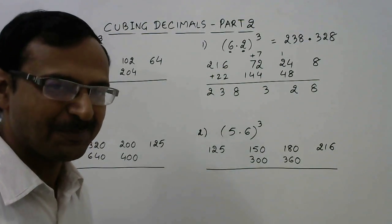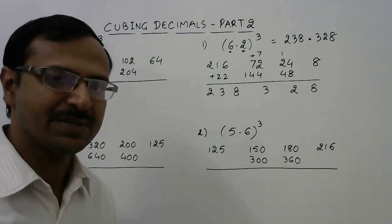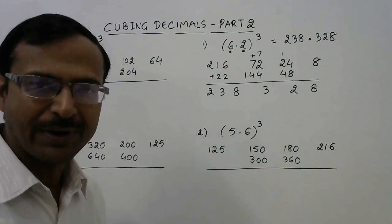The answer for 6.2 whole cube is 238.328. Very easy, isn't it? I am sure with the practice of 1 hour taking 30-40 such questions you will be solving this in 4 to 5 seconds only.